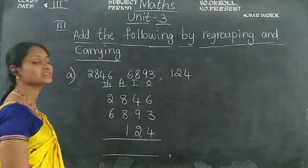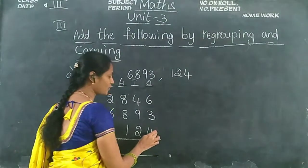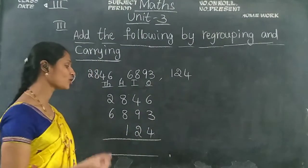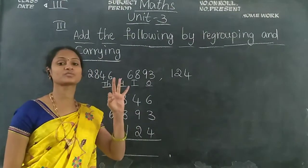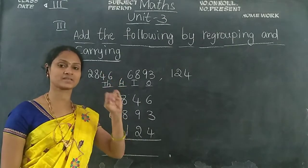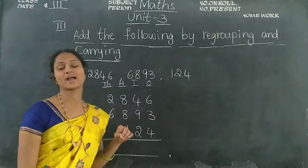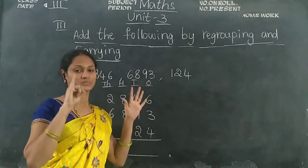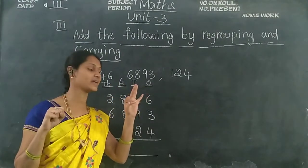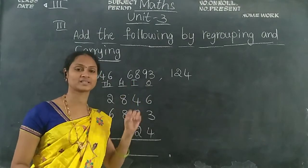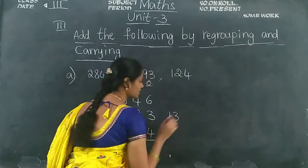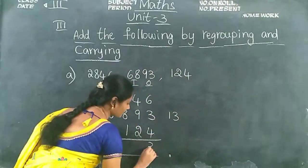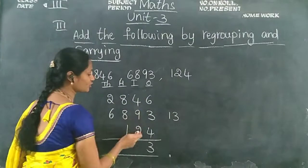Now let us add. Keep 4 in your mind, take 3 fingers: 4 after 5, 6, 7. Now keep 7 in your mind, take 6 fingers: 7 after 8, 9, 10, 11, 12, 13. So 13 is a 2-digit number — write 3 in the ones place and carry 1 forward to the tens place.